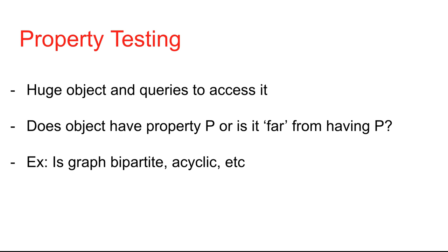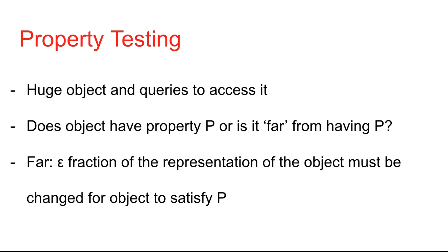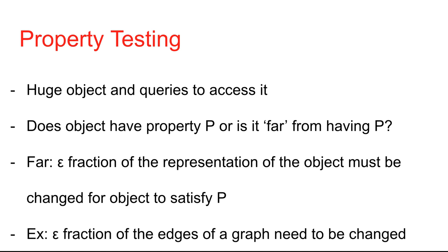Our goal is to determine if the object has some property p, or if it's far from having p. Some properties we might be interested in include: is the graph bipartite, is it acyclic? By 'far,' we mean that the object must be changed a lot to satisfy property p. We have some parameter epsilon, and we say the object is epsilon-far if an epsilon fraction of the representation must be changed. In the graph case, epsilon-far means an epsilon fraction of the edges need to be added or deleted.